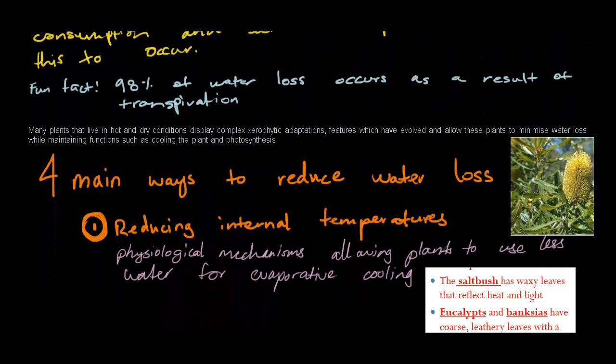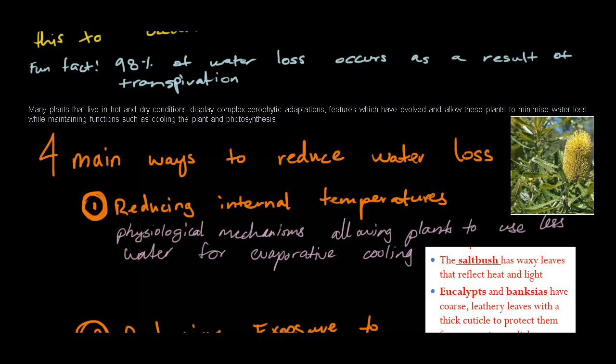So now we come down to this statement. Many plants that live in hot and dry conditions display complex xerophytic adaptations, features which have evolved and allow these plants to minimize water loss while maintaining functions such as cooling the plant and photosynthesis. So there are actually four ways to reduce water loss, which are well known. Number one, which is reducing internal temperatures through physiological mechanisms, allowing for plants to use less water for evaporative cooling. We need to give examples as much as we can for this, because it's based on Australian plants.